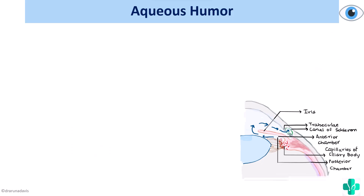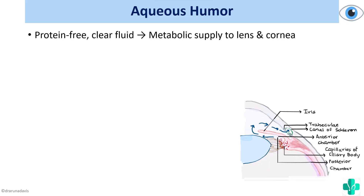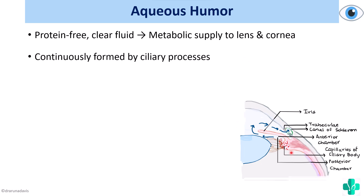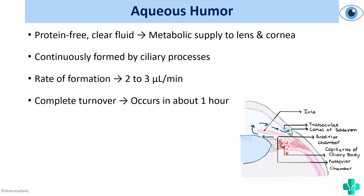Aqueous humor is basically a protein-free clear fluid which is circulating inside the eye that helps to supply the metabolites to the lens and the cornea. Since there are no blood vessels here, the function of supplying nutrients and removing waste products is done by aqueous humor. It is produced continuously by the ciliary processes and the rate of formation is around 2 to 3 microlitre per minute.